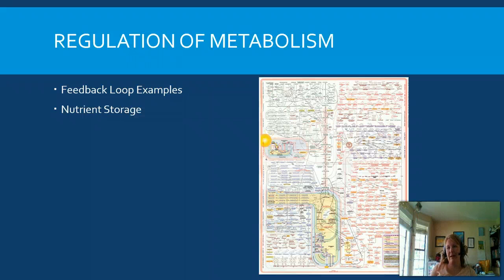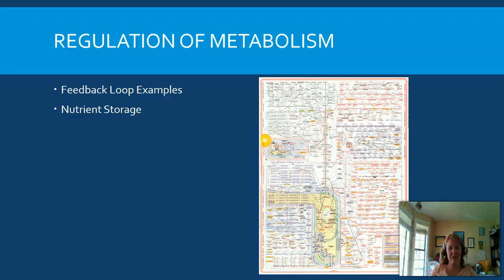Regulation of metabolism plays a huge role, as you can see from the chart on the slide showing just one example of the many feedback loops for metabolism. When we talk about metabolism, we're talking about the whole picture — we have two parts: anabolic systems and catabolic systems. The ABCDs: anabolic systems build molecules, and catabolic systems destroy molecules.